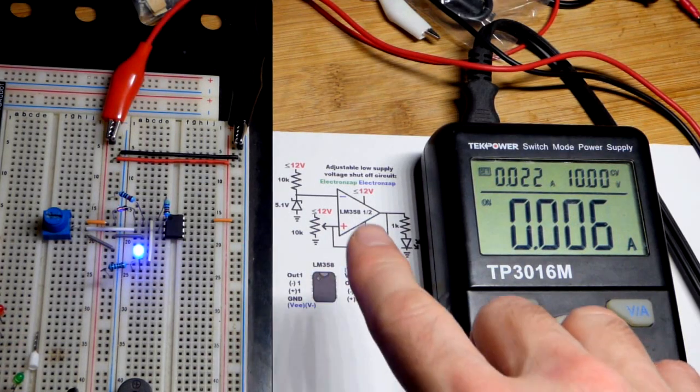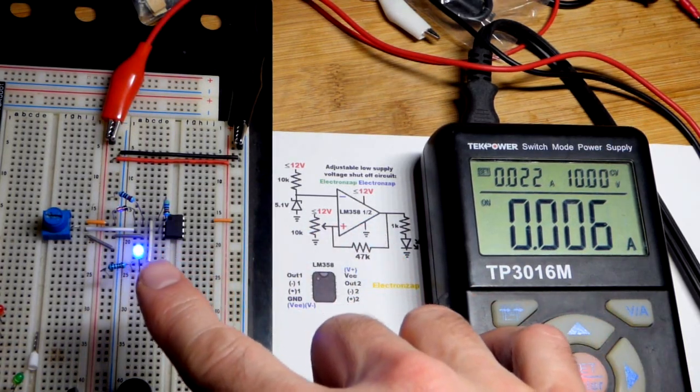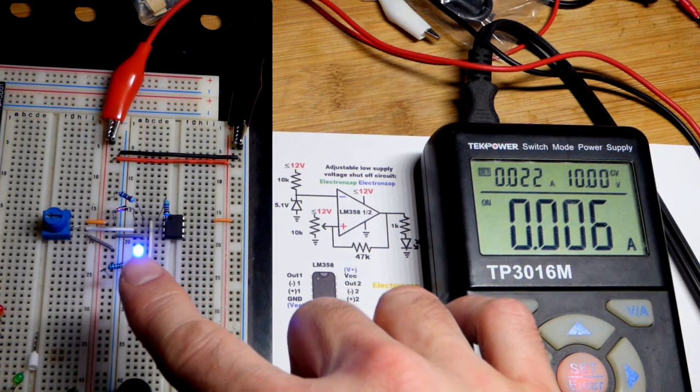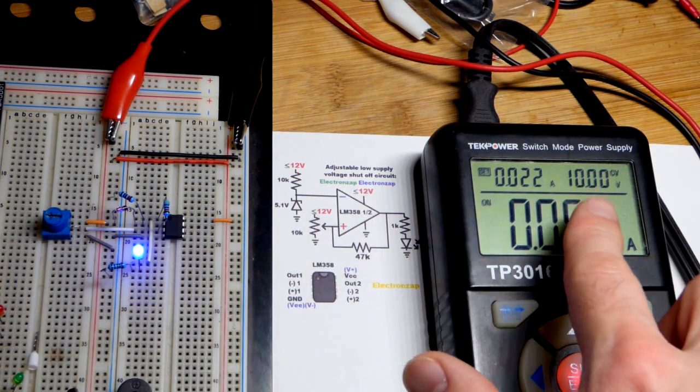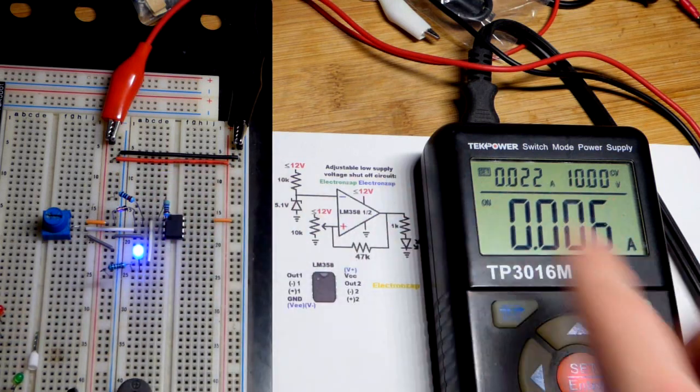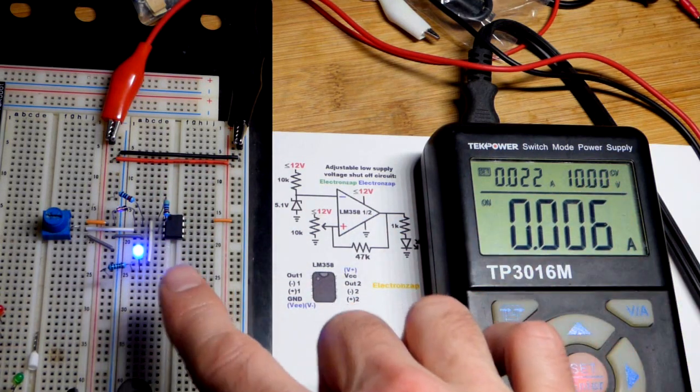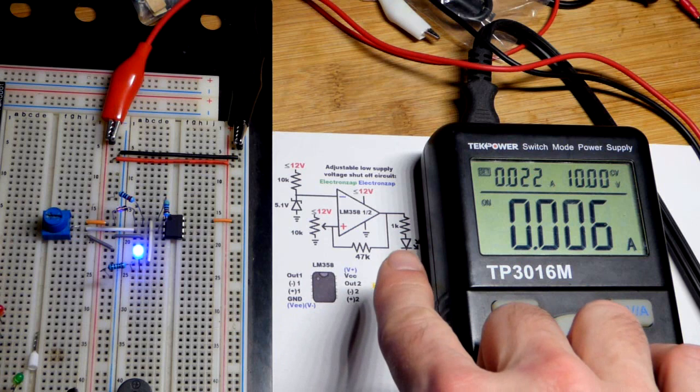Now in this video we're going to look at a circuit that I put together where the output goes low when the supply voltage drops low enough. We're powering it with 10 volts right now, and we could go up to 12 volts because we're using a 1000 ohm resistor to protect an LED, which is our most voltage sensitive part.